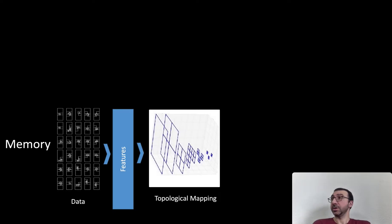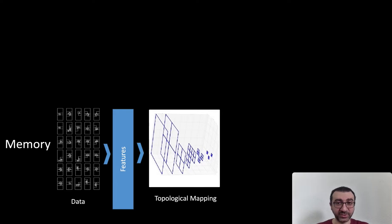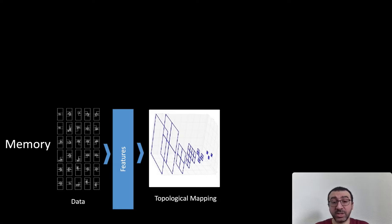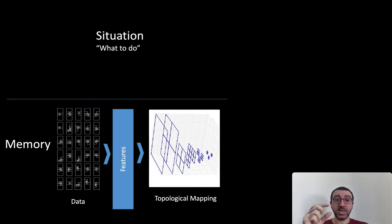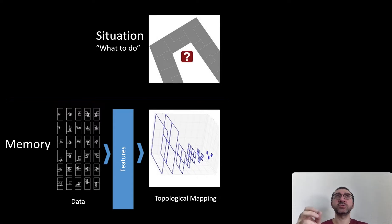For this machine learning aided design approach, there are main steps. You start by collecting a memory represented as data — this memory is floor plans, images, things you want to inspire from. You extract it, create the topological mapping, and the machine becomes able to correlate them. Then in a future situation, when you want to know what to do, you need to articulate a question, because these machines need something specific similar to what you want.